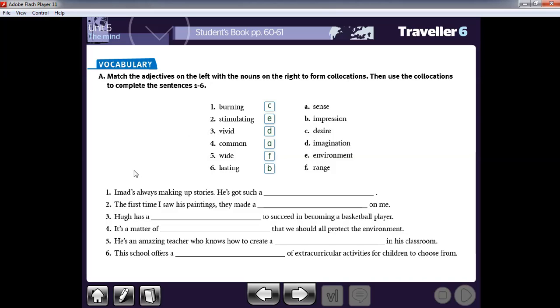Now my students, let's complete the six sentences with the correct collocation. Sentence number one. Imad's always making up stories. He is always all the time make up stories. So he has such a vivid imagination. Good. The first time I saw his paintings, they made a lasting impression on me. His paintings were so magnificent. So they made a lasting impression on me.